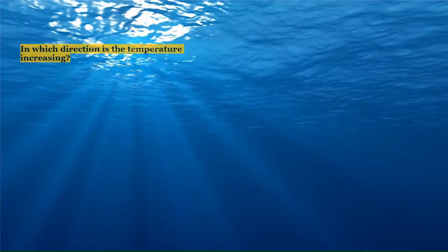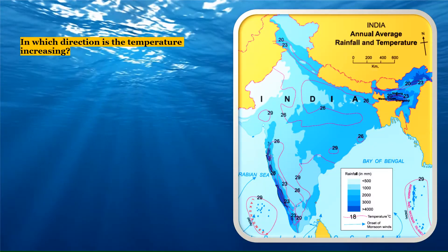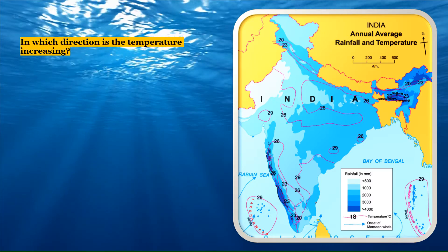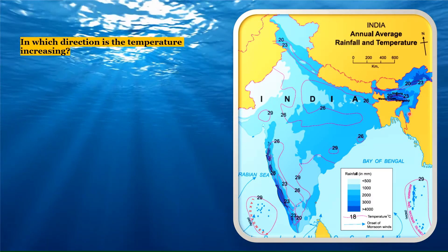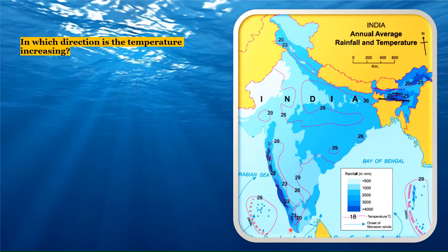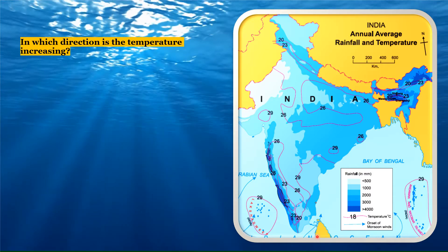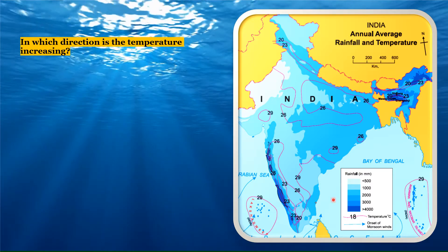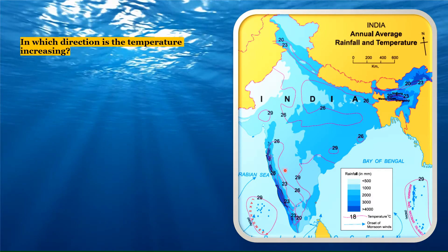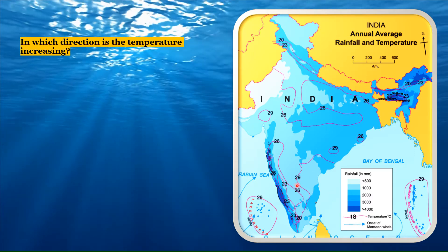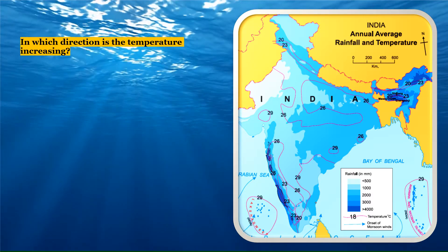The next question: in which direction is the temperature increasing? We need to keep in mind that the Tropic of Cancer passes through the middle of India and the southern tip of India is close to the equator. That is the reason the southern part experiences more heat and lies in the tropical belt. So the temperature increases in the southern direction.